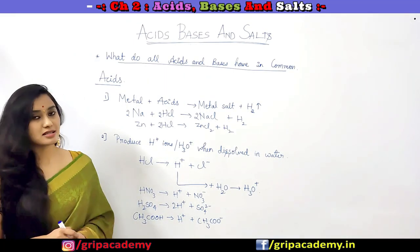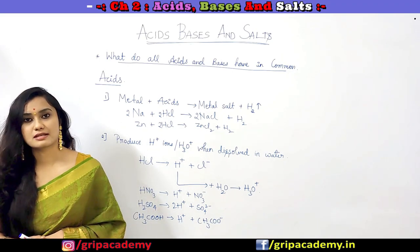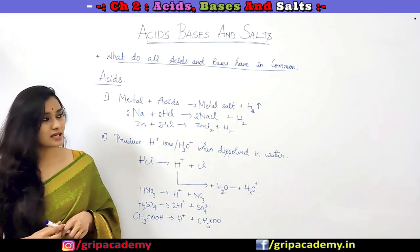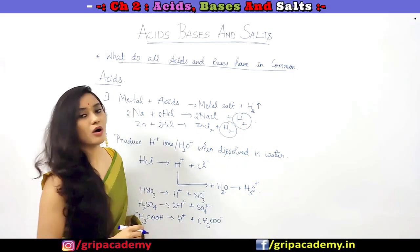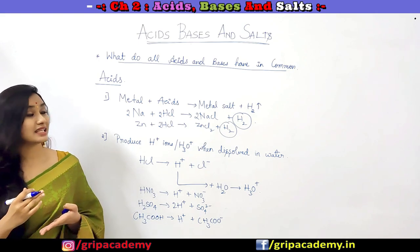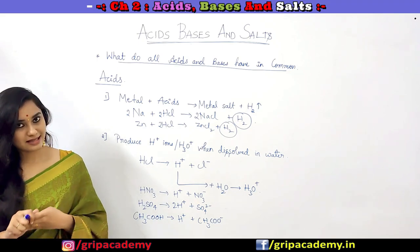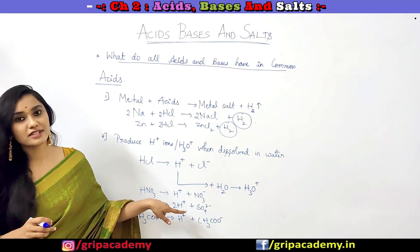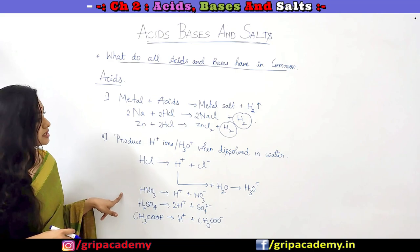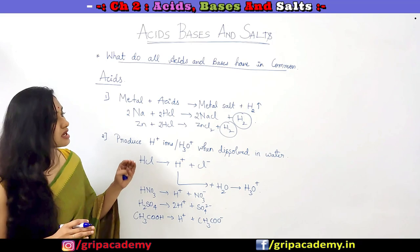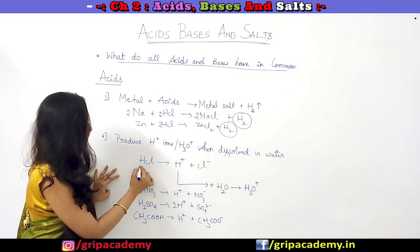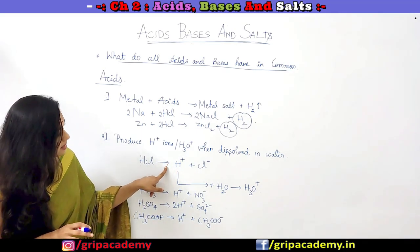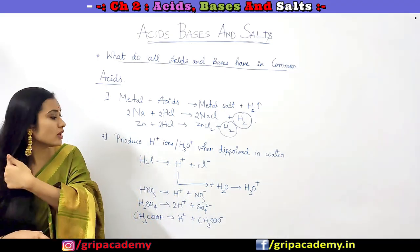Now let us discuss what all acids have in common. First, when acids react with metals, they produce metal salt along with the liberation of hydrogen gas — so one common character is that all acids release hydrogen gas when reacted with metals. The second common character is that they produce hydrogen ions, or hydronium ions, because these hydrogen ions will combine with water molecules to produce hydronium ions. Commonly, all acids will produce hydrogen ions when dissolved in water.